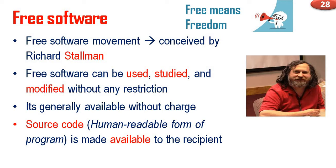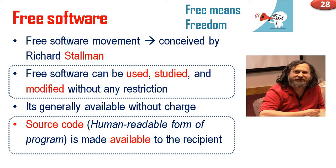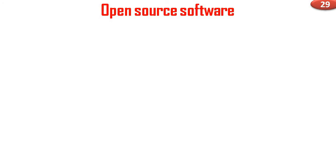Source code is the human-readable form of a program. It is made available to the recipient, so the software you can use, study, and modify without any restrictions. The software can be used, studied, and modified without any restrictions, and the source code — the human-readable form of the program — is available to the recipient. These two are the backbone of free software: freedom to use, freedom to modify, and source code availability.